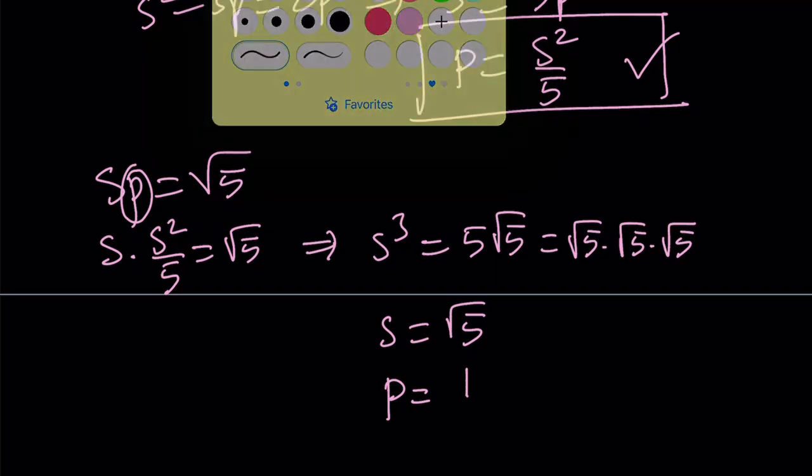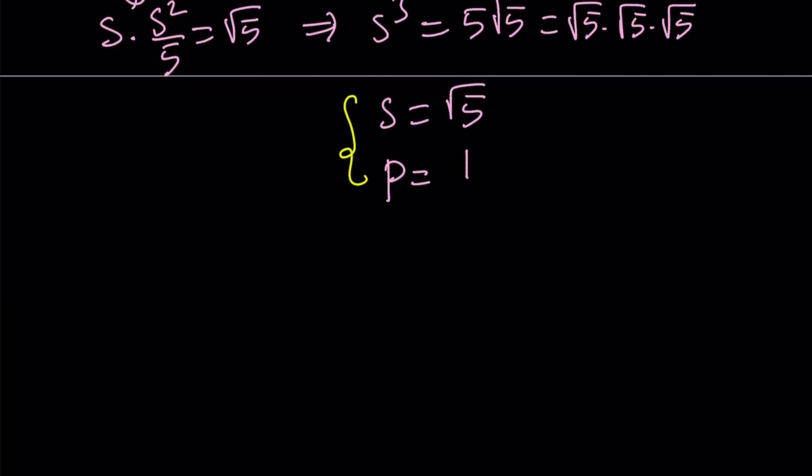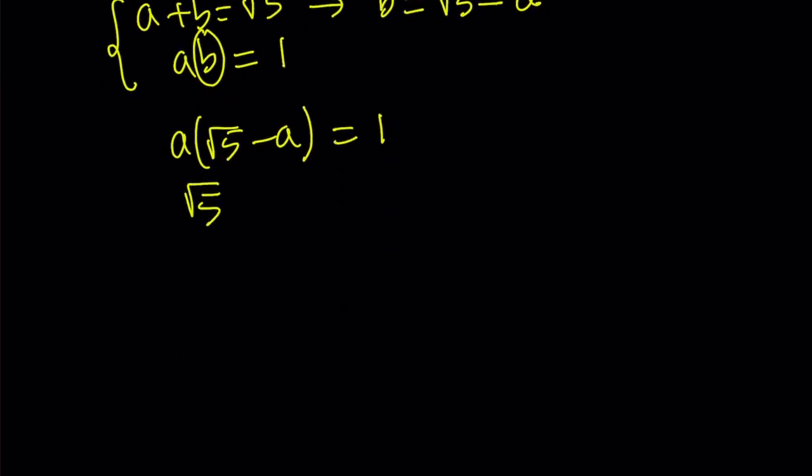Right now, we do have another system. You can write a+b for s and ab for p, and come up with a system. How do you solve the system? I can use substitution. I isolate b, it becomes √5 - a. Then in the second equation, if I replace b with √5 - a, I get a quadratic equation: √5·a - a² = 1, or a² - √5·a + 1 = 0.